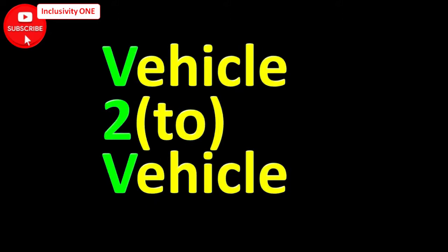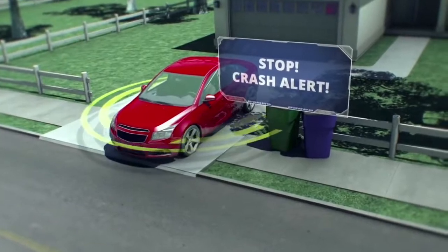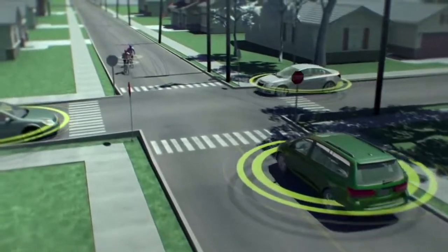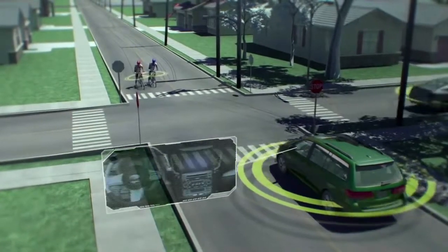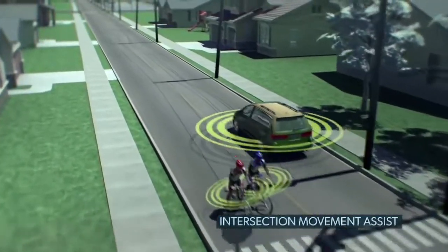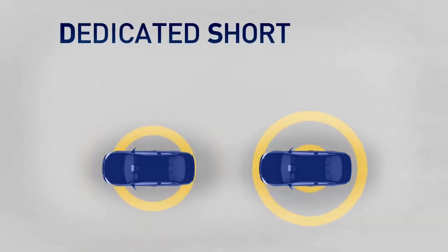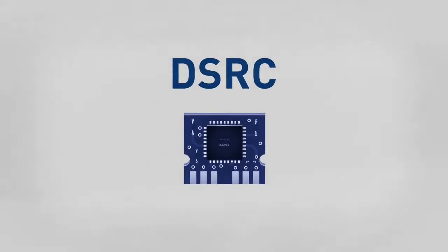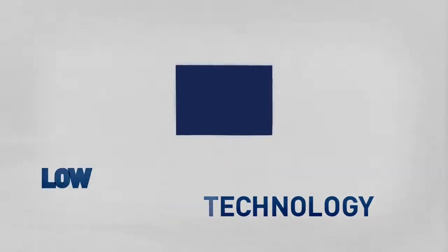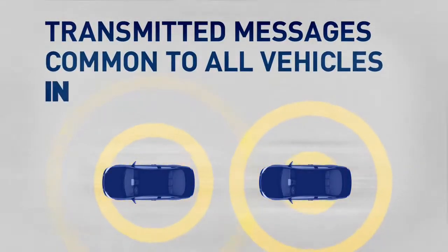V2V — Vehicle to Vehicle Communication — is one of the low-cost technologies estimated to significantly reduce accidents. Vehicles communicate with each other using wireless technology similar to Wi-Fi, within a 300-meter communication range. The system uses a wireless protocol known as DSRC — Dedicated Short Range Communication — combined with GPS technology to form the V2V system.